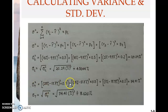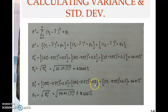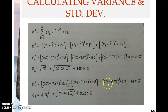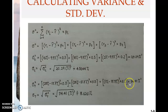Then you add the second component for the normal growth state: 20% return for stock T minus the expected return of 17.7%, squared, then multiplied by 0.5. Then plus the third component under recession: 1% return for stock T minus 17.7% expected return, squared, then multiplied by the probability of recession which is 0.2.